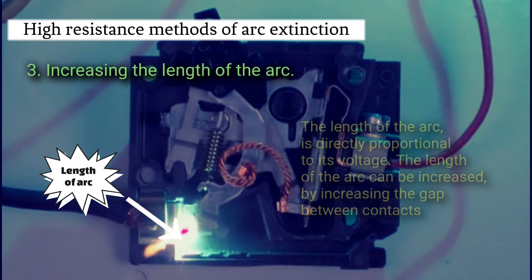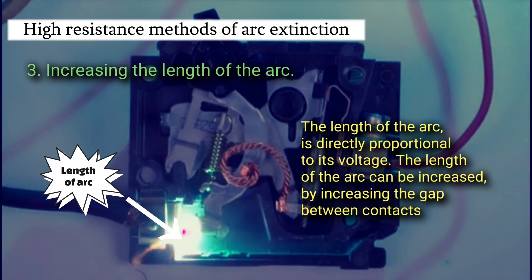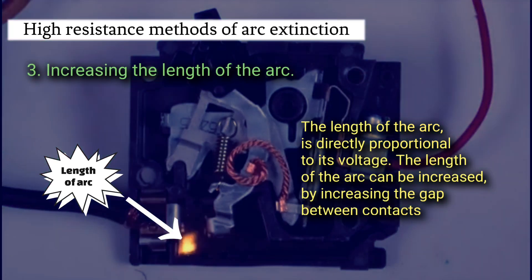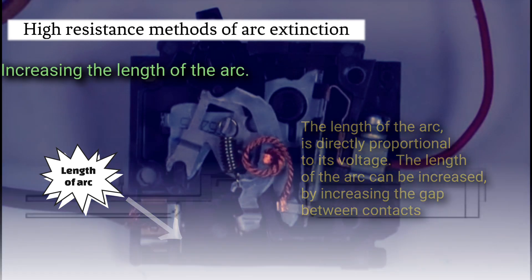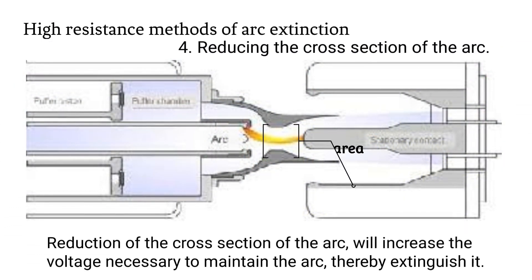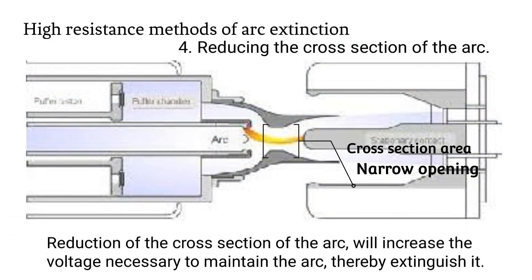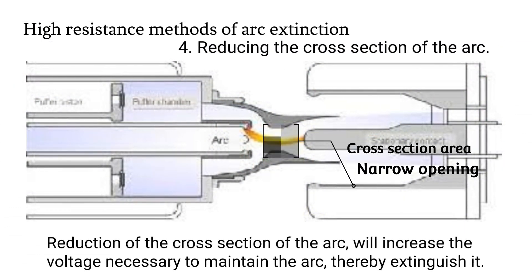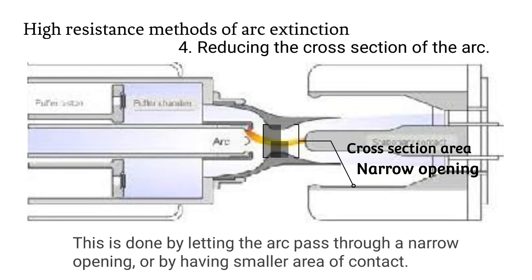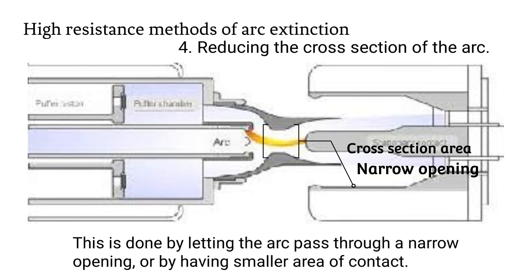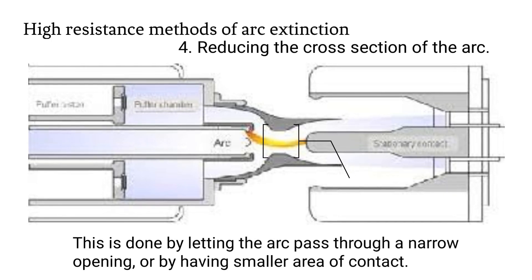Increasing the length of the arc. The length of the arc is directly proportional to its voltage. The length of the arc can be increased by increasing the gap between the contacts. Reducing cross section of the arc. Reduction of the cross section of the arc will increase the voltage necessary to maintain the arc, thereby extinguishing it. This is done by letting the arc pass through a narrow opening or by having a smaller area of contact.